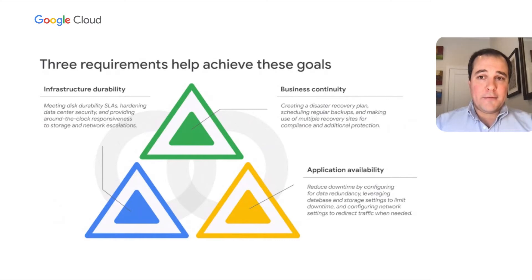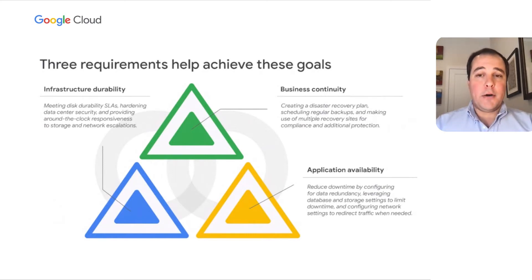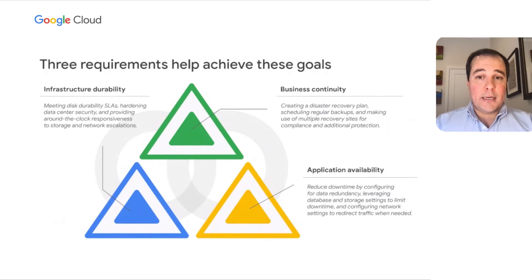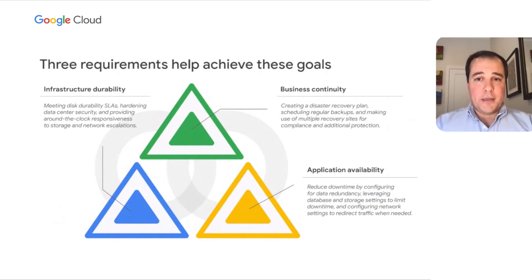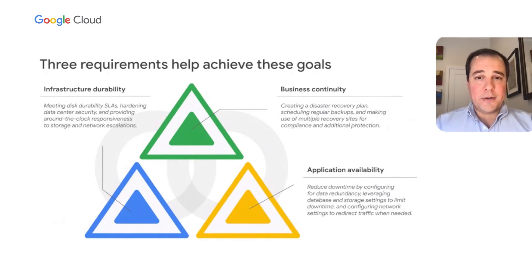When we break down the requirements for those linked goals, the first one on our list is infrastructure durability. It lines up more with the defensive nature of resiliency, because here we're talking about providing hardware SLAs, making sure our data centers are safe, and thinking about how we respond to escalations within our network. A great example of infrastructure durability is our public durability service level objective for Persistent Disk, our block storage offering. For regional balanced PD, for example, we share that we have better than 99.9999% durability — six nines.